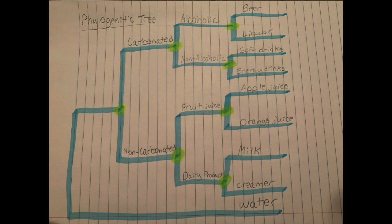Then if we go back, we can see that non-carbonated drinks will branch into fruit juice and dairy product. Fruit juice will branch into apple juice and orange juice. Dairy product will branch into milk and creamer.